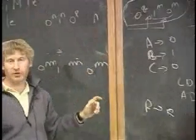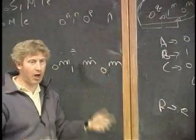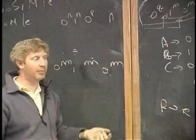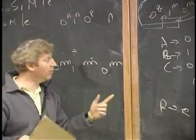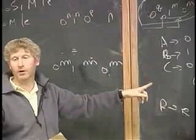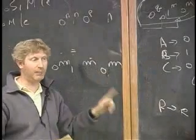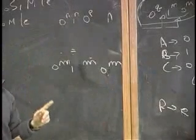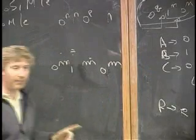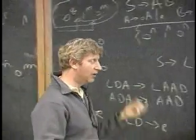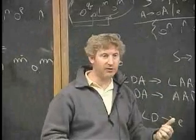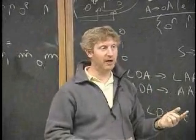So are context-free languages closed under intersection? No. So are they closed under complement? No, because they're closed under union for sure. If they were closed under union and complement, then they'd be closed under intersection. So context-free grammars are closed under concatenation, closed under union, not closed under complement, not closed under intersection.